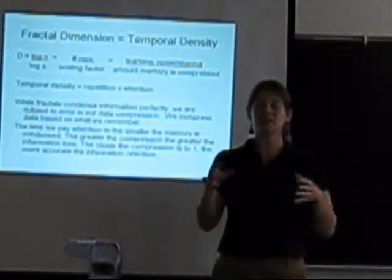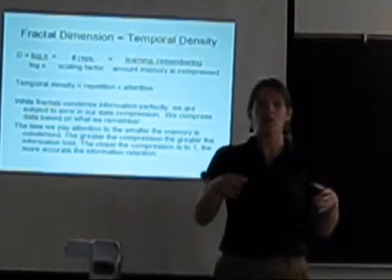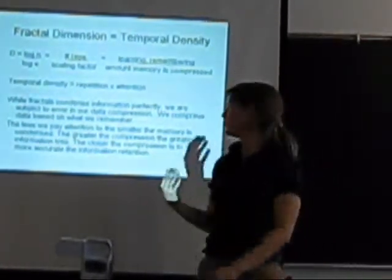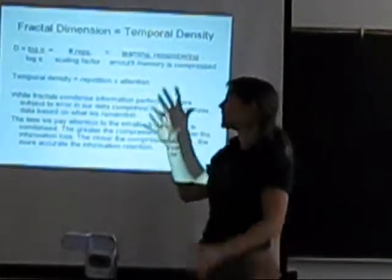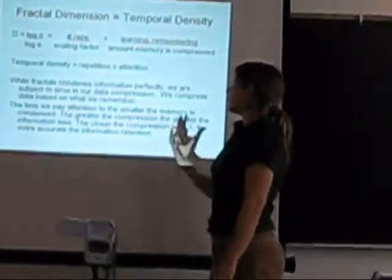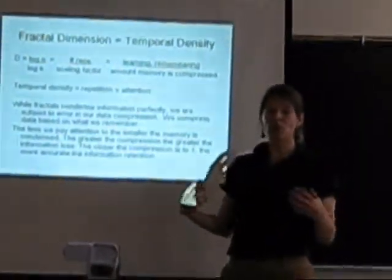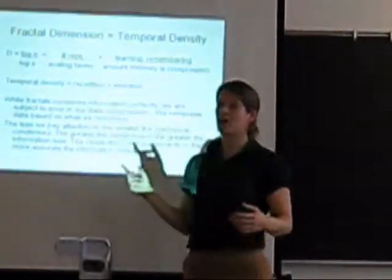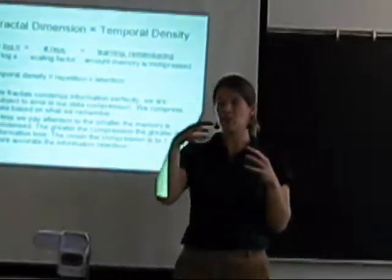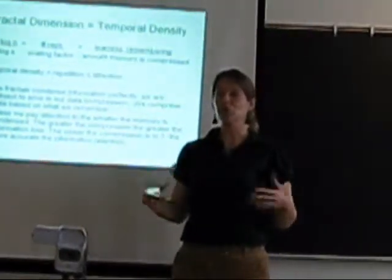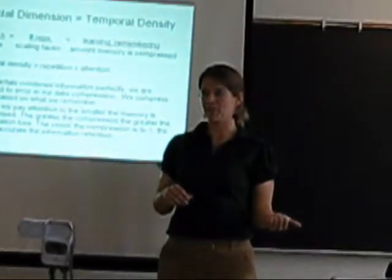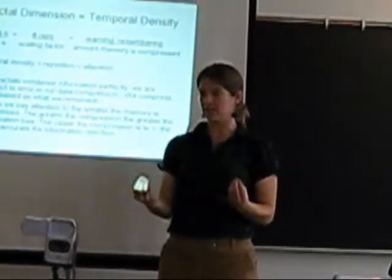It's the compression of information into memory depending on how much attention we're paying — how much we lose in that compression. Just like computers compress data, some algorithms compress it more accurately than others. The way we compress data in building our experience of time, there are more and less accurate ways to do that, and that corresponds to the scaling factor. Unlike fractals, which don't lose information when condensing, we are subject to error in data compression — so we store multiple copies of things. When you have an experience, you store it in your brain in multiple places, tagged to multiple different senses, so when you recall it you have multiple places to recall from, and your error decreases the more repetitions you have.